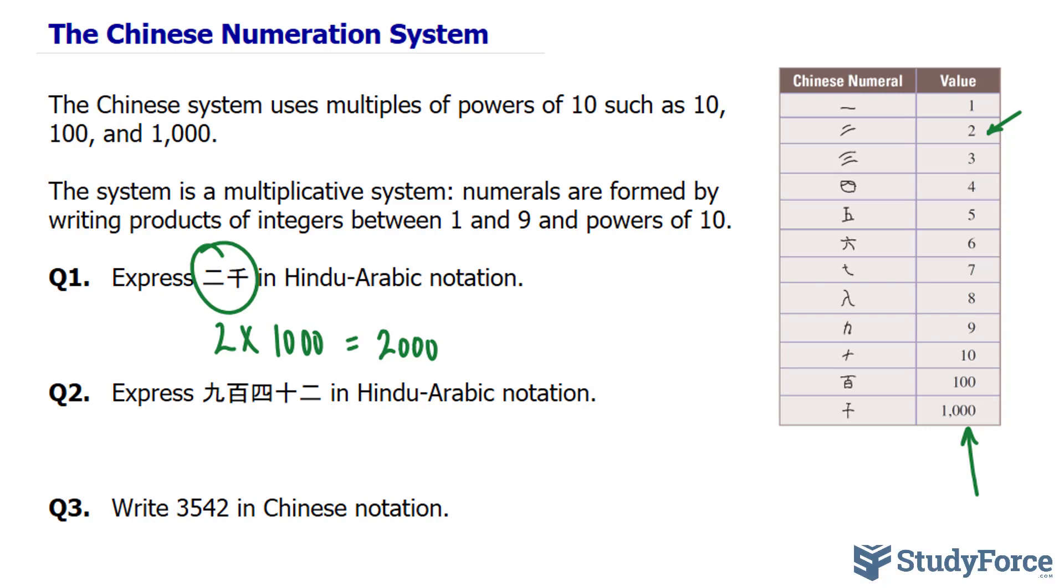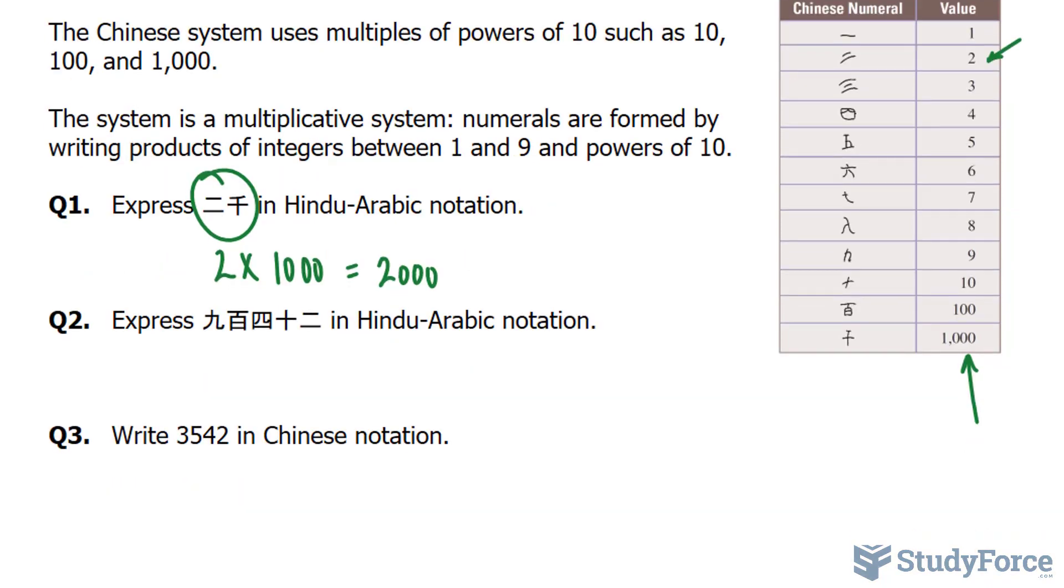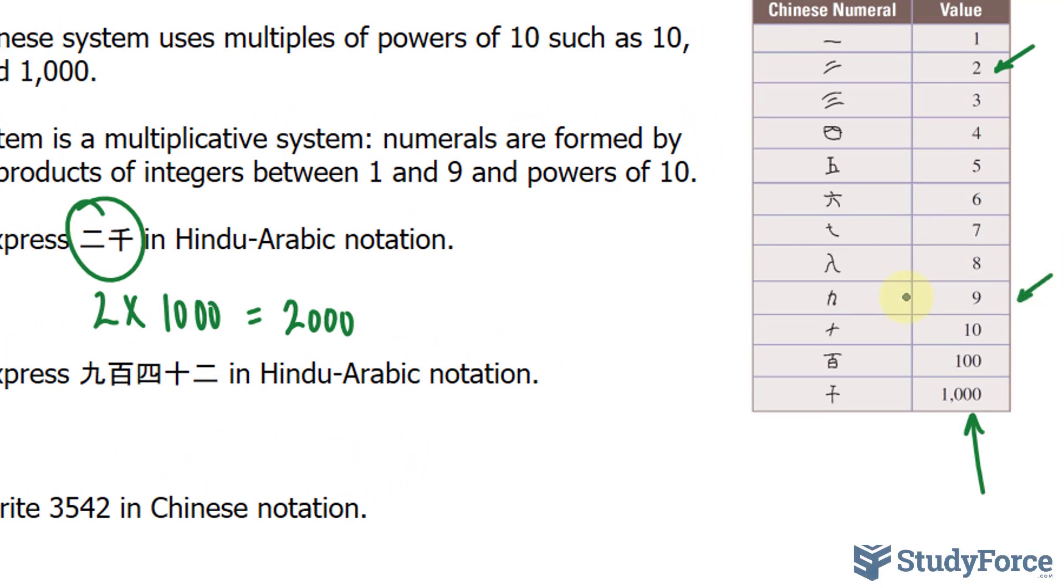That one was easy. Let's try another one. Here we have to express the following numeral in Hindu-Arabic notation. Let's begin with the leftmost numeral. This right here is the number 9, and then it's followed by this symbol, which represents 100. 9 times 100, that's 900. So these two together make 900.